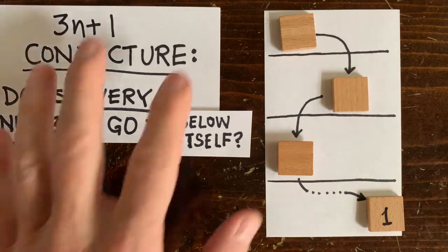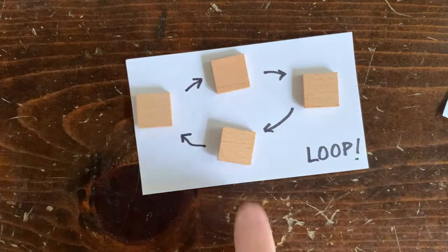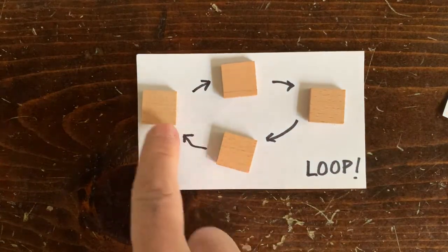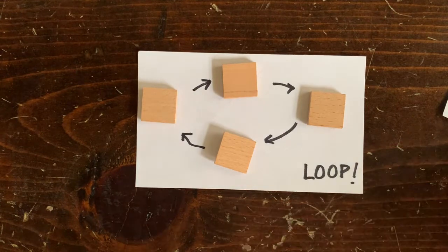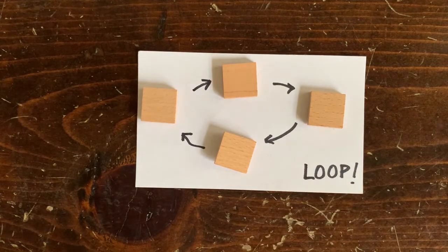Of course, there might be a number that doesn't go below itself. For example, it might be the bottom of some loop that goes round and round. So the question we want to talk about now is, does every number go below itself?